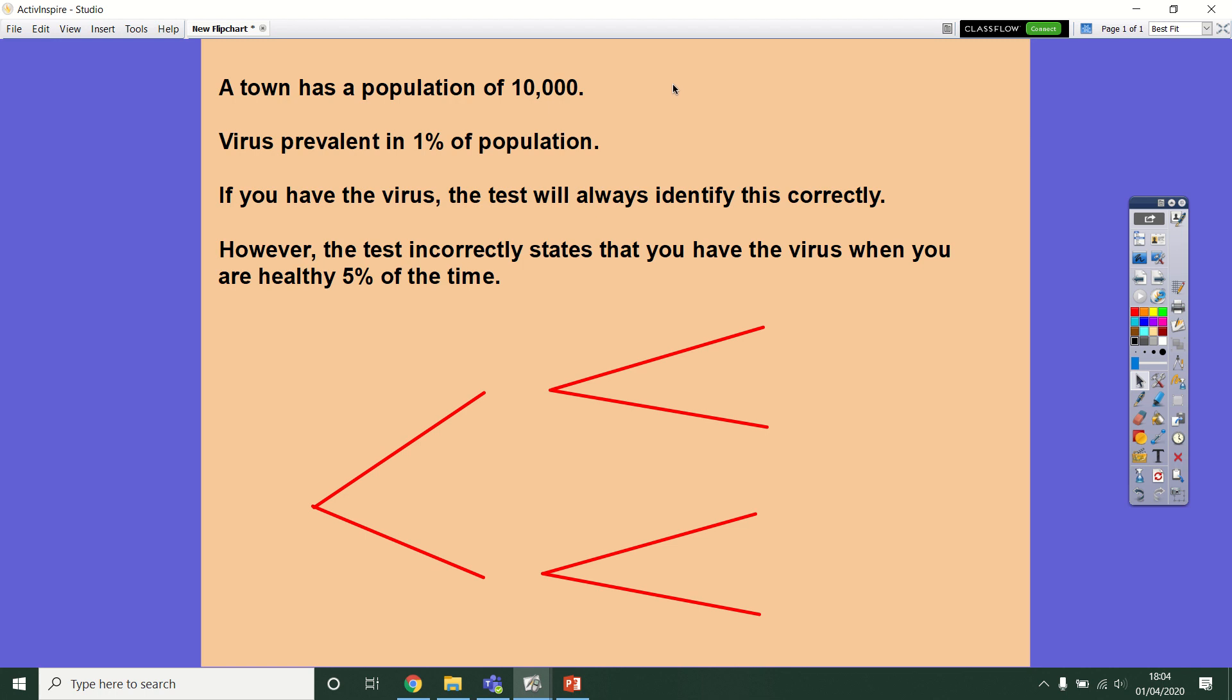So I want you to imagine that a town has been infected by a virus. This town has a population of 10,000 people and the virus, which is as yet unnamed, is prevalent in 1% of the population.